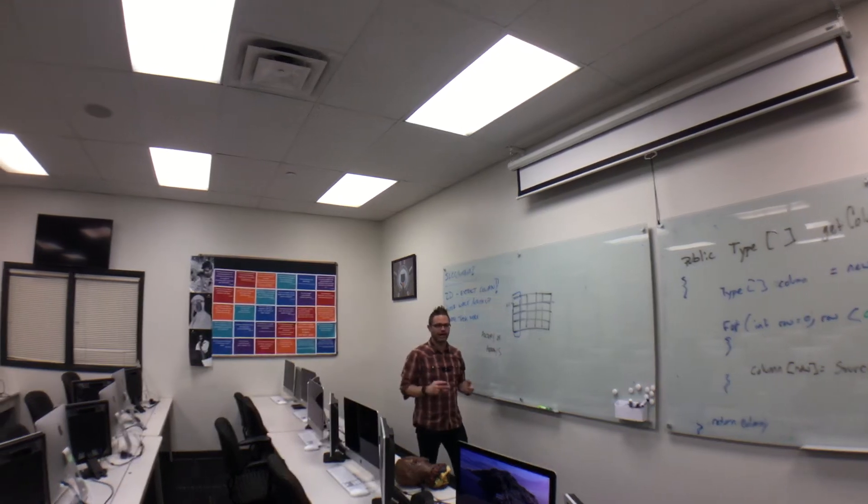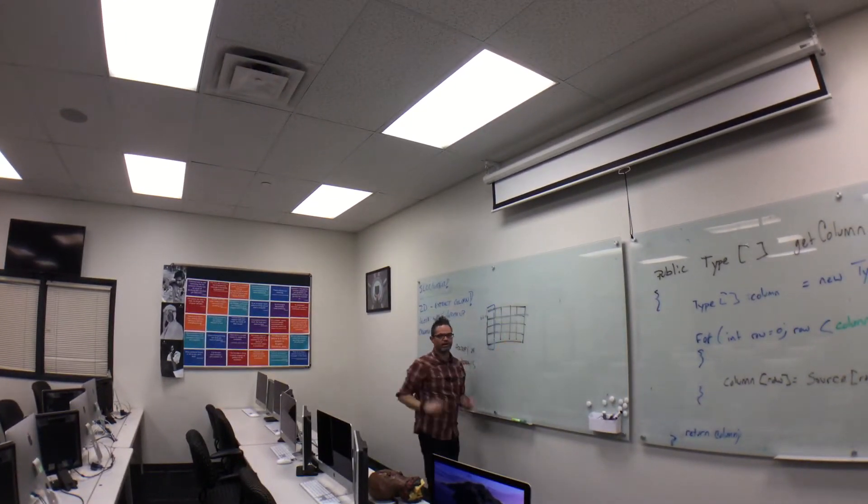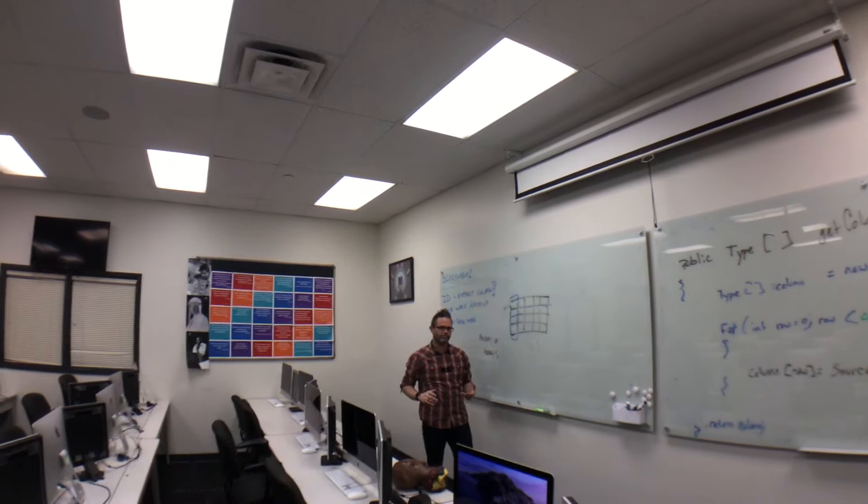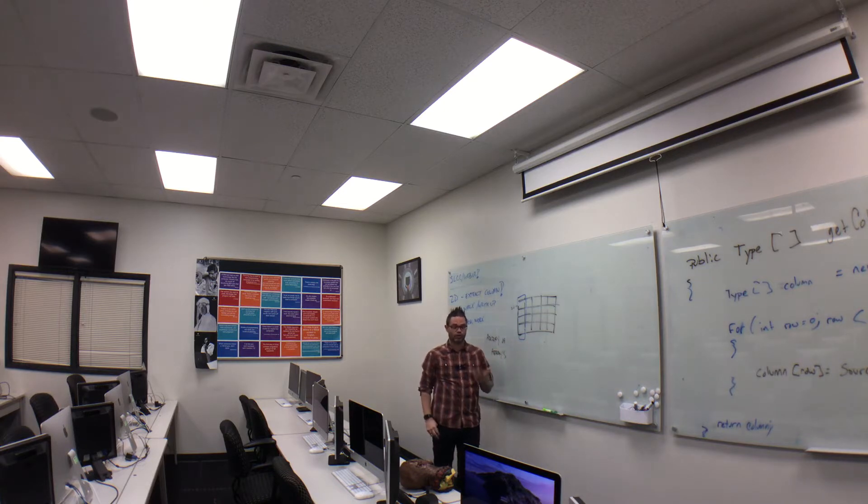However, if I want to take out a column's worth of data from the array, specified by the column index we're working with, we have to come up with a way to extract that out manually. That means we have to create a method to do so, because it's work we have to do to call and retrieve that information.